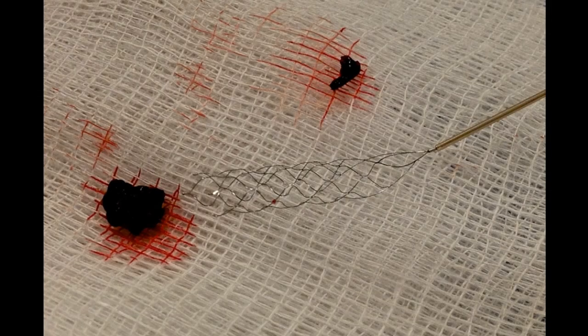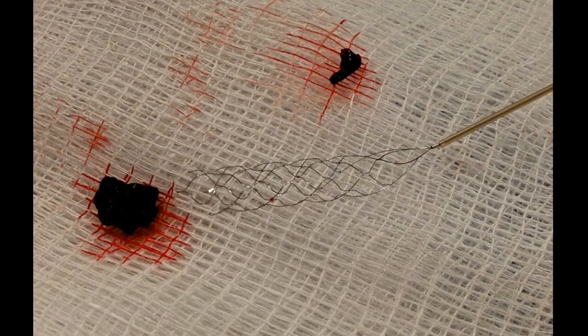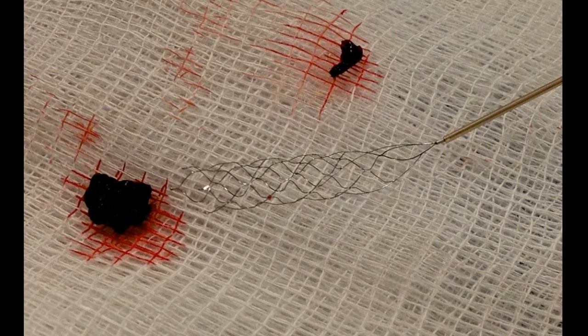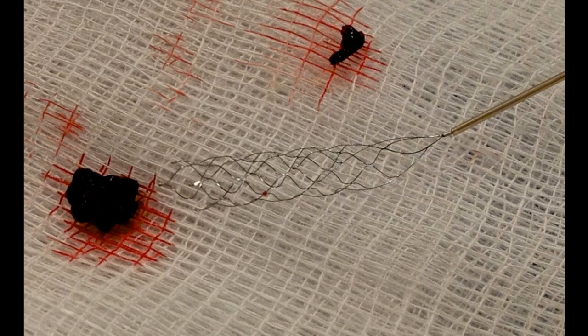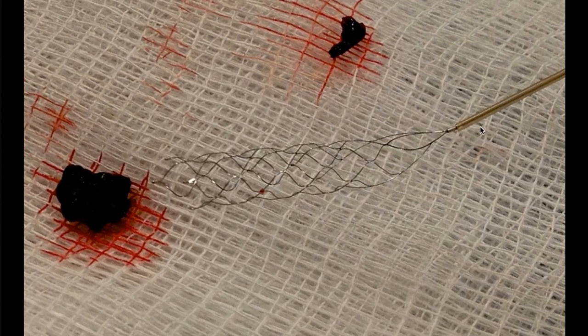So the interventional neuroradiologist deployed the endovascular stroke treatment device, the retrievable stent, and pulled the clot out of the patient's brain artery. Here's what the stent as well as the blood clot look like outside of the patient's body.